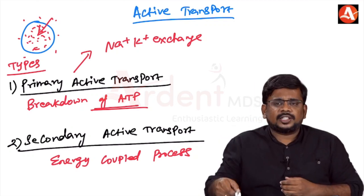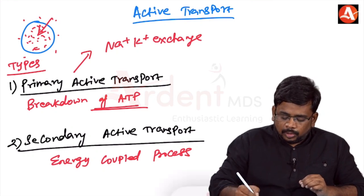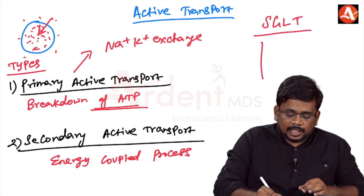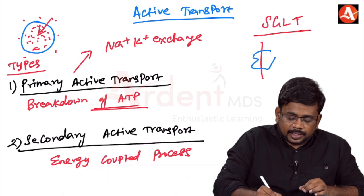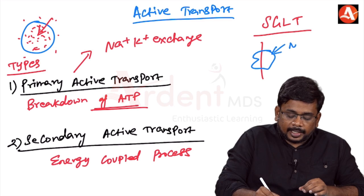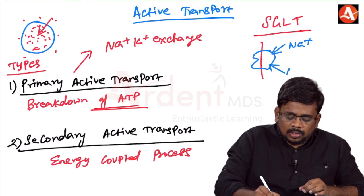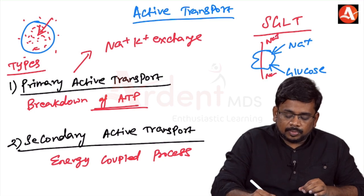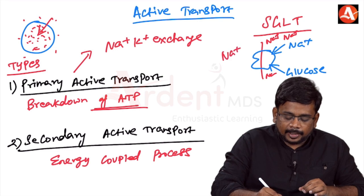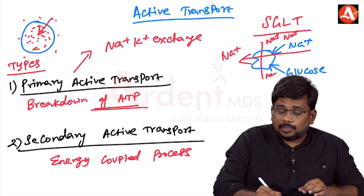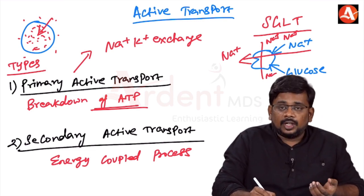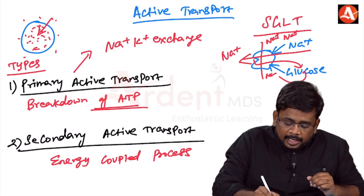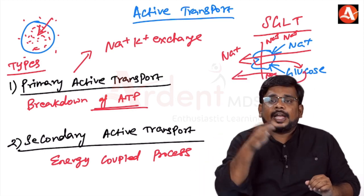An example of the energy-coupled process is sodium-glucose transport. Here, the carrier protein binds sodium and glucose. Since sodium is more outside the cell, it enters passively — which produces energy. That energy is utilized by glucose to enter the cell. This is what is called secondary active transport.